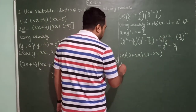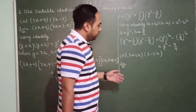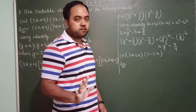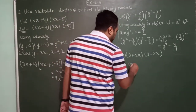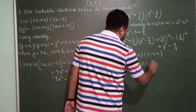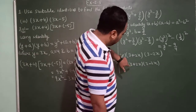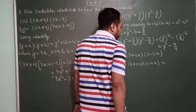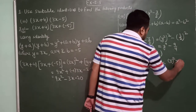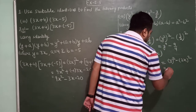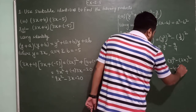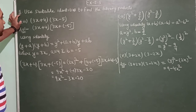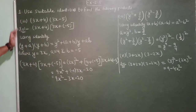Now the last one: (3 + 2x) into (3 − 2x). This is of the form (a + b)(a − b). So a is equal to 3 and b is equal to 2x. Applying the identity a squared minus b squared: 3 squared minus (2x) squared equals 9 minus 4x squared. Please note it down.